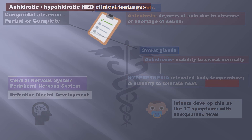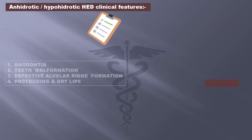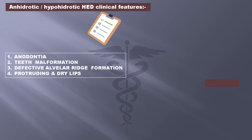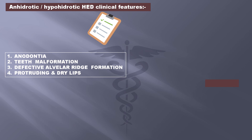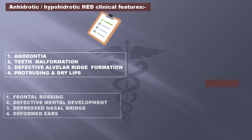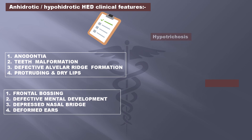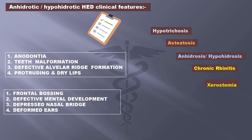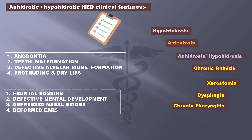In short, the clinical features can be remembered as: anodontia, teeth malformation, defective alveolar ridge formation, protruding and dry lips, frontal bossing, defective mental development, depressed nasal bridge or saddle nose, deformed ears, hypotrichosis, xeroderma, anhydrosis or hypohydrosis, chronic rhinitis, xerostomia, dysphagia, and chronic pharyngitis.